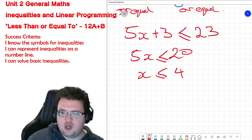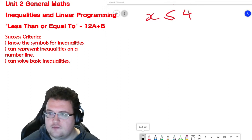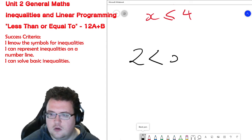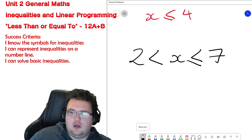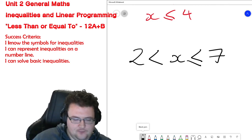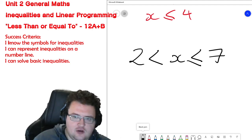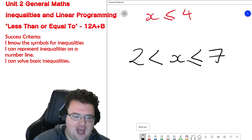What you can sometimes do with inequalities though is you can create something that looks like this. So it is x, but it's sandwiched between, it's part of two inequalities. If you were to write that out as an English sentence, what do we have here?